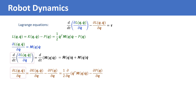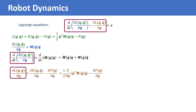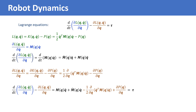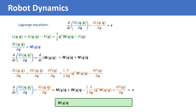If we substitute these two terms into the Lagrangian equations, we see the dynamical model of the robot manipulator in this form. The first term is the inertia matrix times q-double-dot. We define c as an n-by-n matrix such that the second term minus the third term equals c times q-dot. For a given robot manipulator, the matrix c is not unique, but the vector c times q-dot is unique.